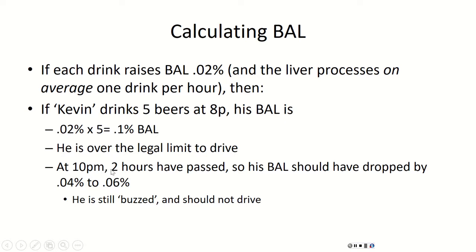Two hours pass — it's now 10 p.m. Since the liver processes 0.02% alcohol per hour, two hours means 0.04% has been eliminated. Kevin's BAL drops from 0.10 to 0.06. He is still buzzed, and in many states he's still over the legal limit. This is a crude calculation assuming standard drinks and average processing — but even at 0.06, he should not drive.